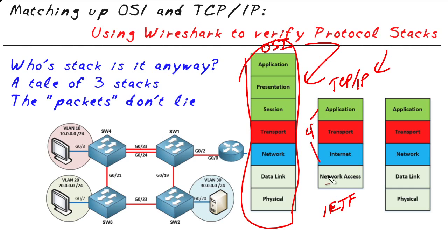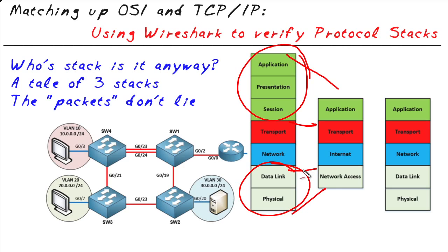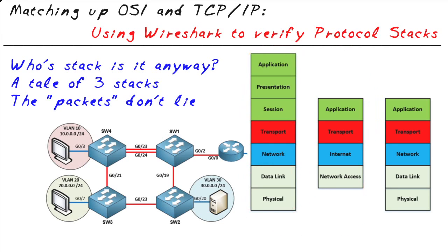Students are also told TCP/IP is only four layers: network access, internet, transport, and application. Those same students are told that the three top layers of the OSI model map pretty closely to the application layer of TCP/IP, and that the bottom two layers of the OSI reference model map to the network access layer. What I'd like to share as a stumbling block for a lot of people is that when we talk about protocol stacks in the TCP/IP world today, we're actually borrowing labels and numbers from the OSI reference model.